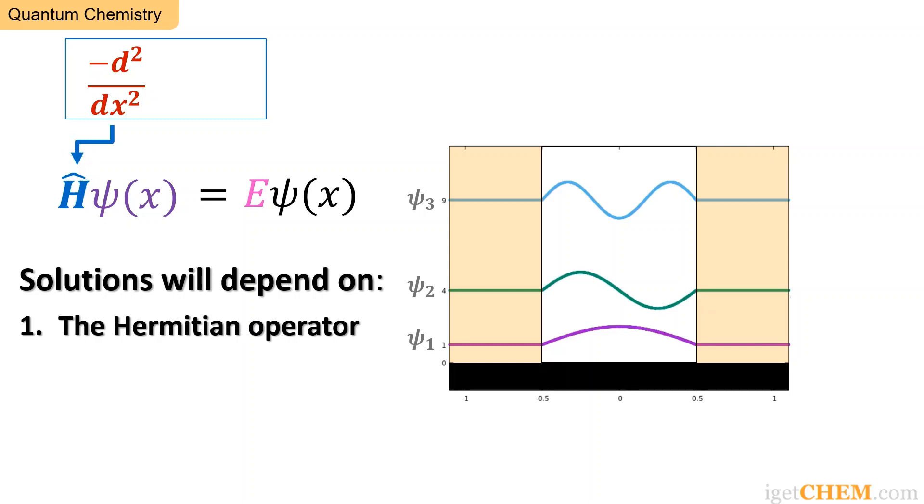Two, the eigenfunctions will depend on any boundary conditions imposed on the system. For example, while the blue function psi 3 is a solution to the particle-in-a-box problem, this red function, whose second derivative is indeed equal to itself, is not a proper solution, because it does not meet the boundary condition that psi must be zero in the forbidden regions.